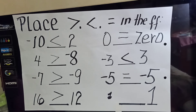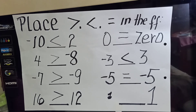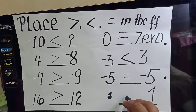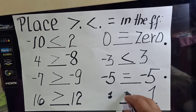The last example: 1 written small and 1 written big — what relation exists? No matter how small or large it is written, whether as a symbol or as a word, whether here in the Philippines, in Japan, in America, or in Italy, one is always equal to itself. Therefore, the relation that exists is equal to.